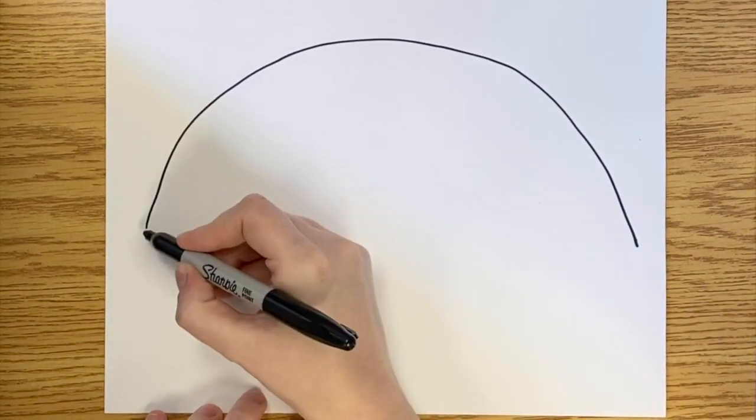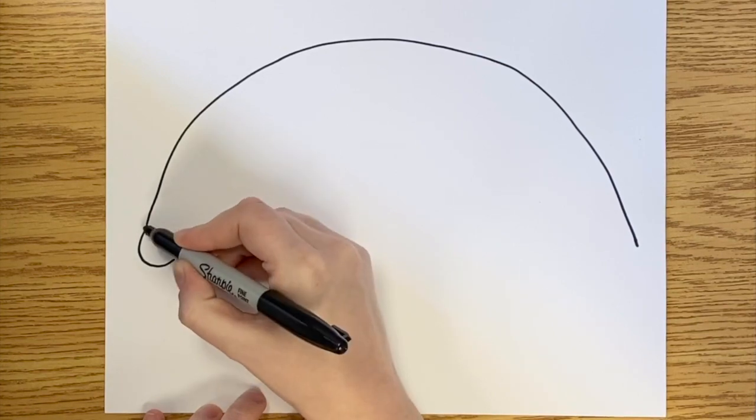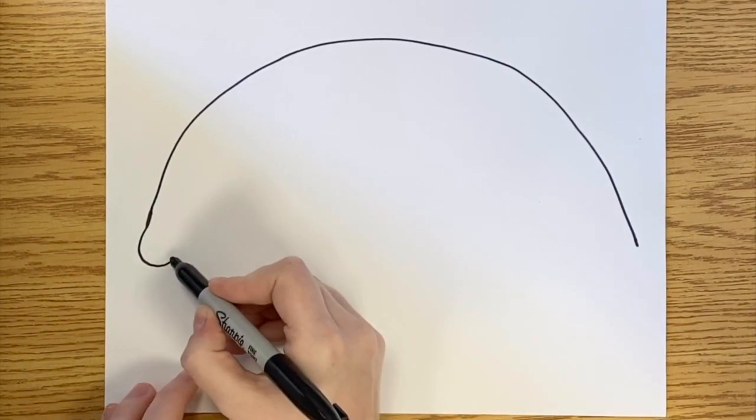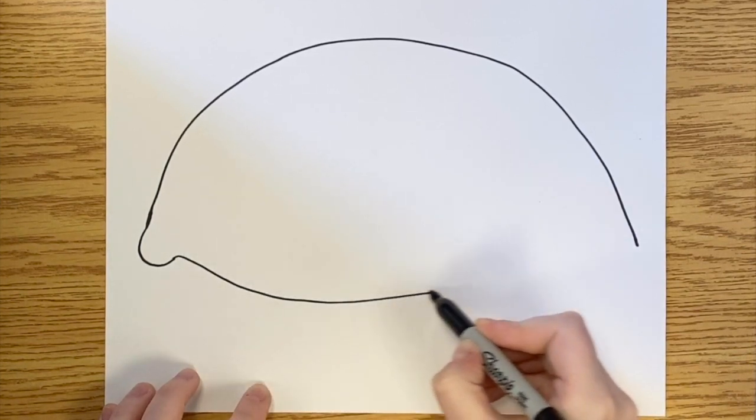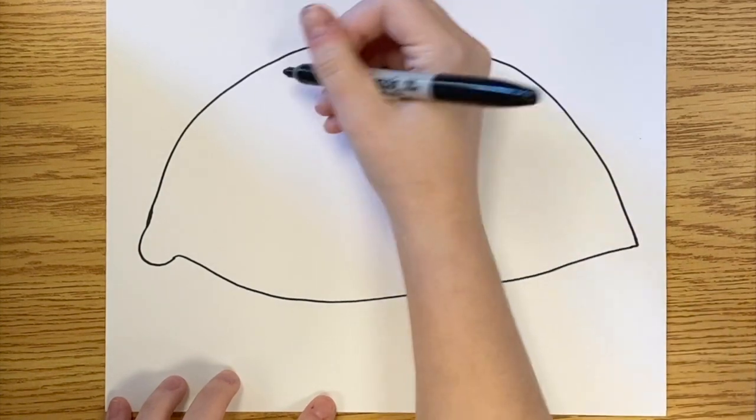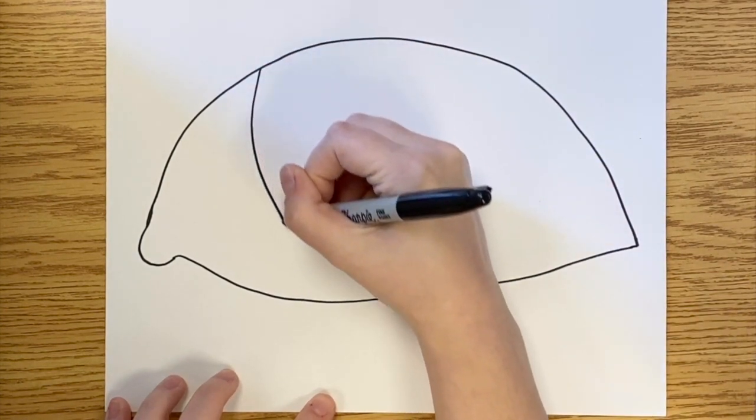Now I'm creating a small little curve for the tear duct of my eye. Once I have that tear duct shape, I'm going to connect that to the other side of my eye. It's still a curved line, but it's not as curved as the top.